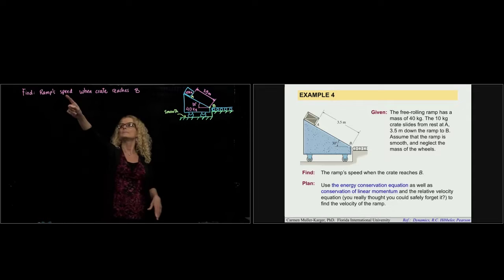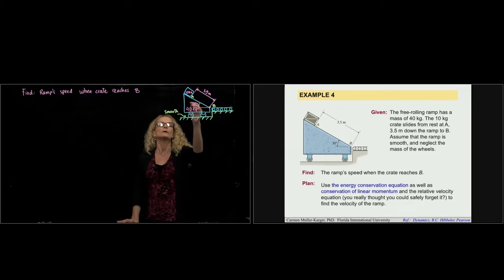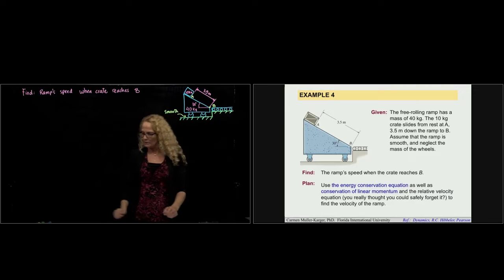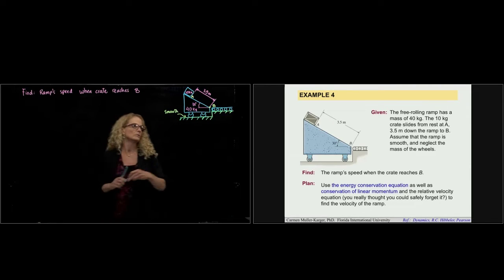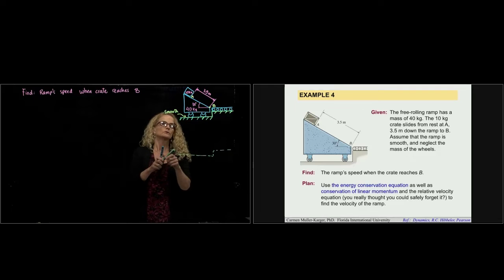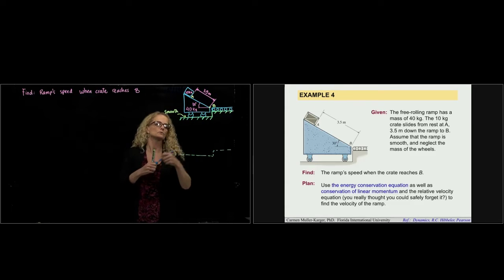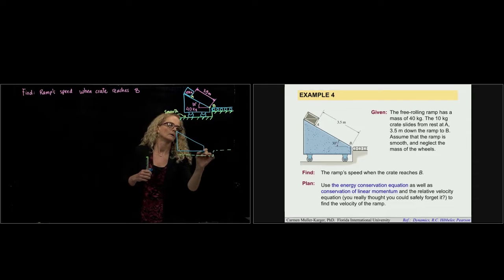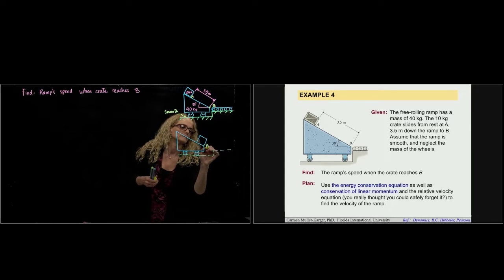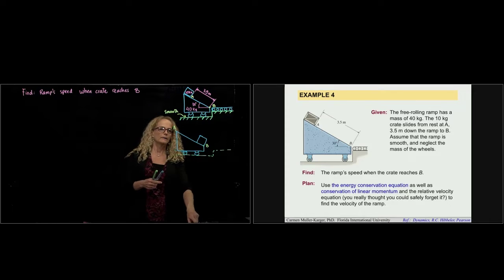We are to find the speed of the ramp when the crate reaches point B. If we want to draw what is happening: the crate moves down while the ramp moves backwards. Here I have the box at point B — this will be point B — and this is point A.